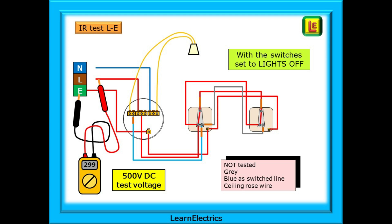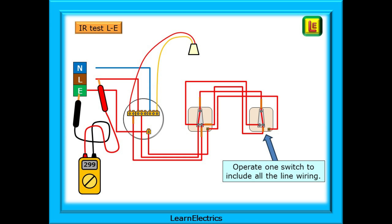The link that we used for the lower ohms tests must be removed. In this drawing, the switches have been set so that the lights would be off. Testing between the line conductor and the earth bar, you can see that not all the circuit wiring is red. This means that some parts of the wiring have not been tested. The grey wire, the blue conductor used as a switched line and the ceiling rose wires. This is not acceptable. We need to do more to include all the wiring. If we operate any light switch, we will effectively put the switches into the lights on position. Now we've included all the wiring in the circuit except the neutral from the consumer unit and the neutral to the light pendant. But we will get to this. A reading of 299 mega ohms is a pass on my meter.